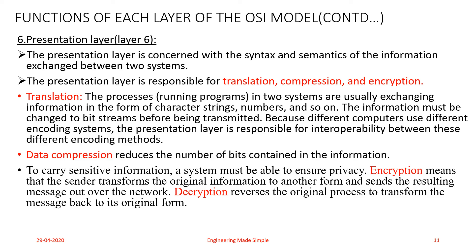Compression: memory is a costly resource, and due to various error control and flow control mechanisms, we need to add external overhead to data before transmission. To save memory resources, data compression is used. In networks, we talk about saving the bandwidth of the communication media. Data compression reduces the number of bits contained in the information.